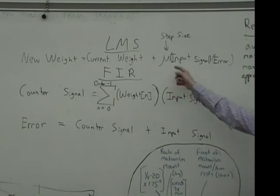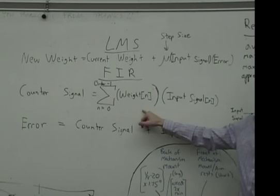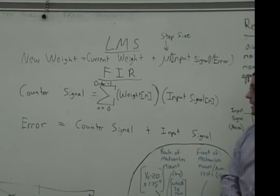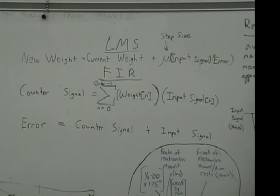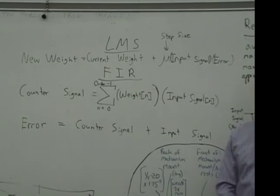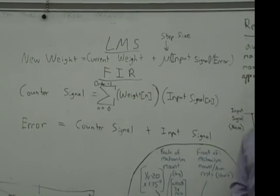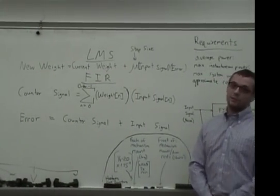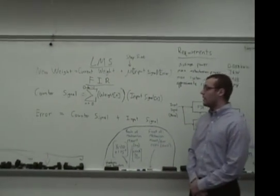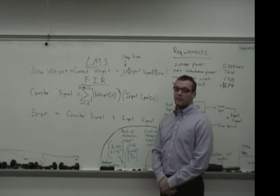These weights that are produced by the LMS then come into the FIR filter. This FIR filter is a sum of products. It's just a little window of the signal that it multiplies the weights by that window of the input signal, and that goes for the order of the filter. If we had a five tap filter, it would just do five iterations of this. If it was a 32 tap filter, it would do 32 iterations of this. What's produced by this is the counter signal.